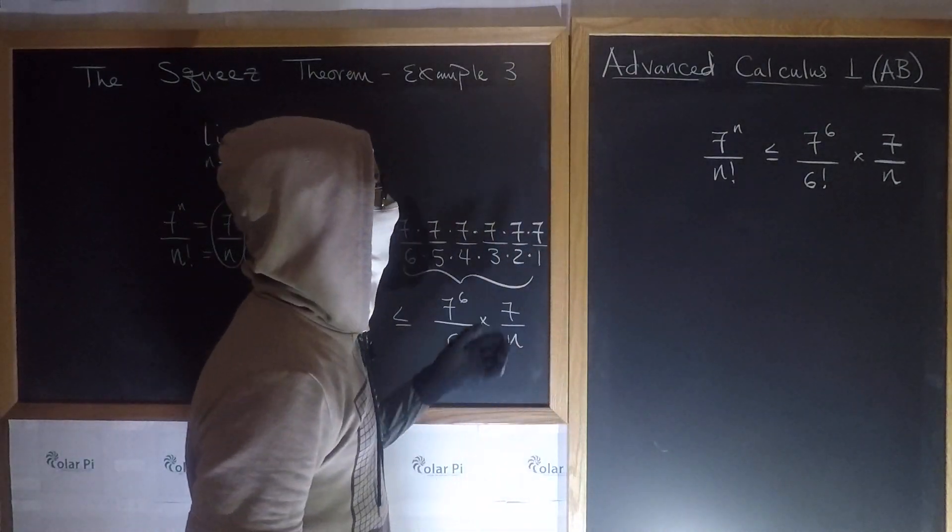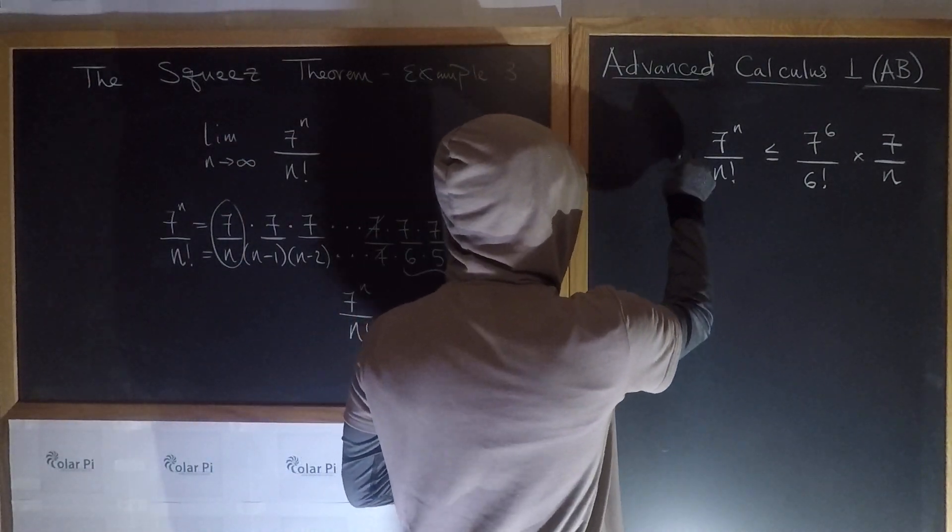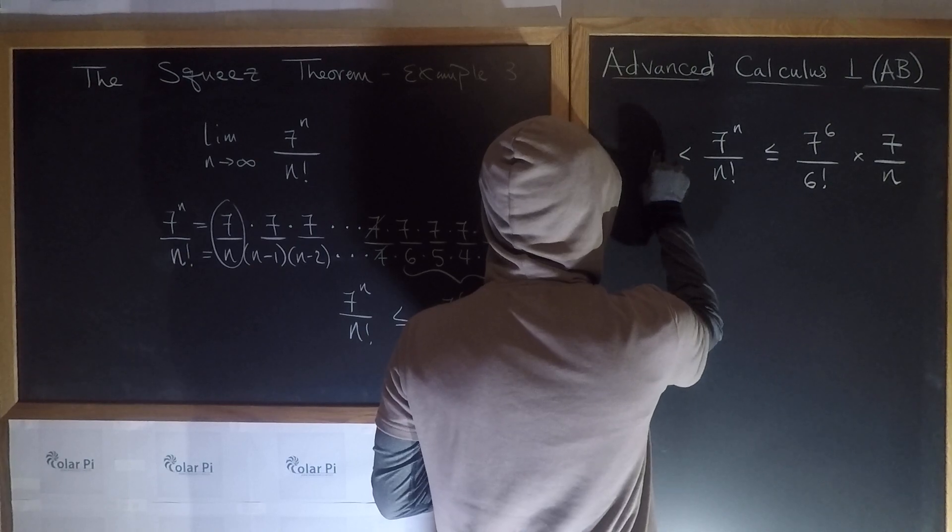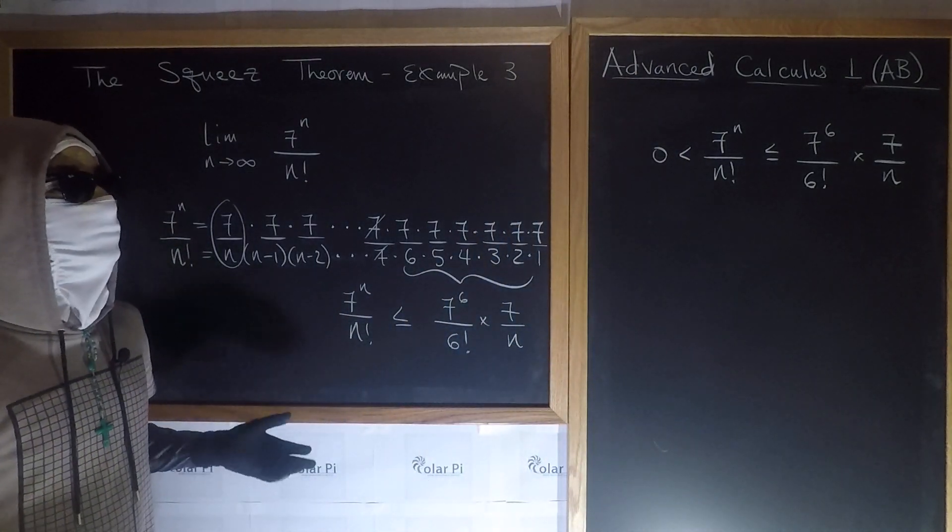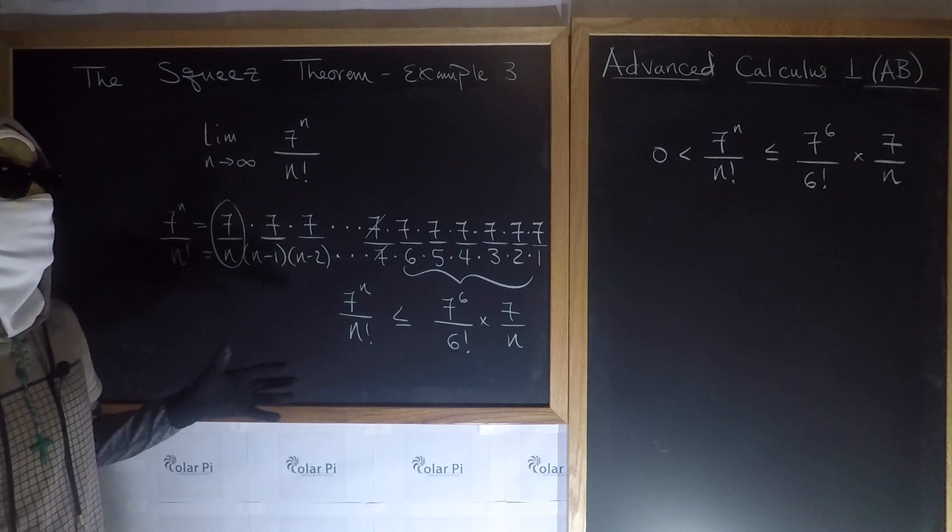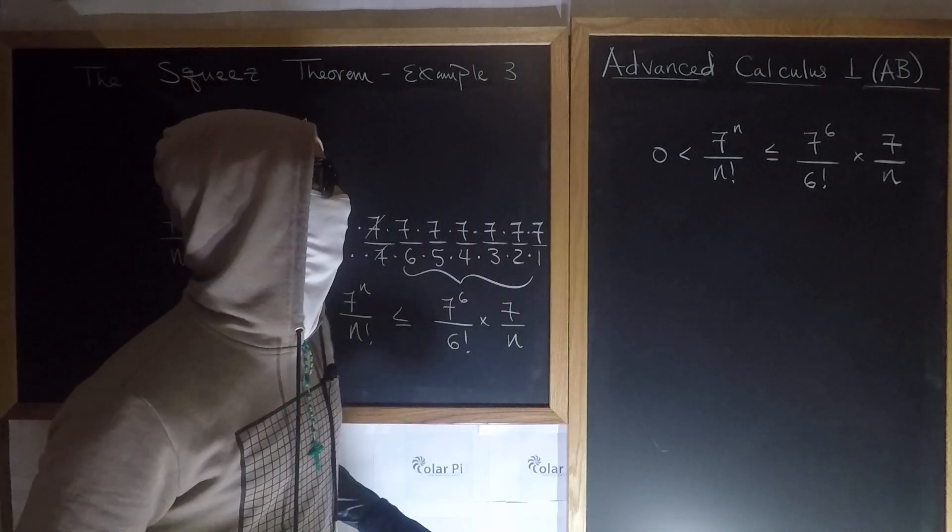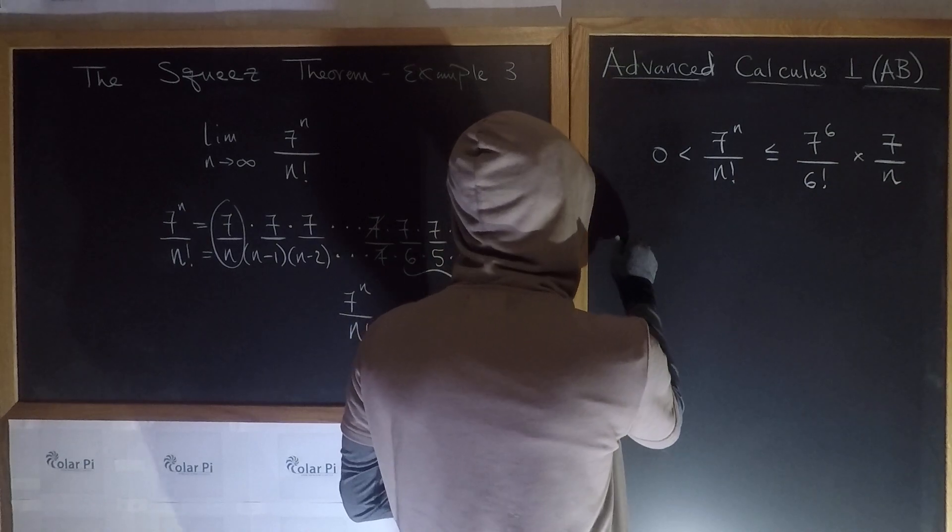And on the left, 7 to the n over n factorial is clearly more than 0. So on the left, I could write that. So now we want to apply the squeeze theorem because we've managed to squeeze 7 to the n over n factorial. And so I go, lim as n goes to infinity of 0 is less than, lim as n goes to infinity of our guy, 7 to the n over n factorial.